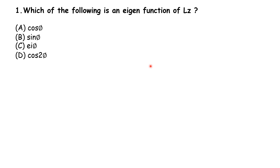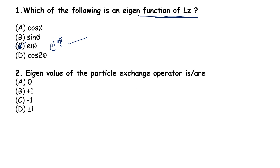Which of the following is an eigenfunction of Lz? We need to find what the eigenfunction and eigenvalue are. The answer is option C — e to the power iπ. Option C is the correct answer.